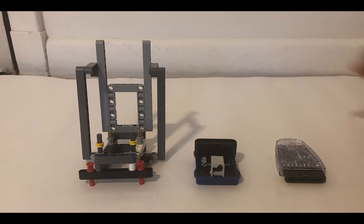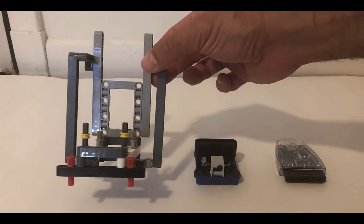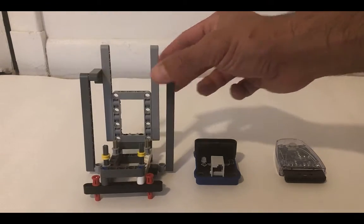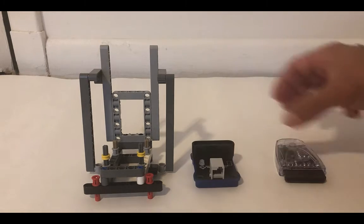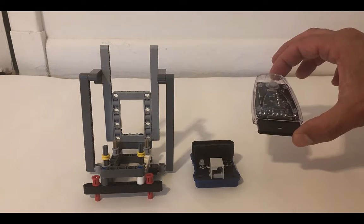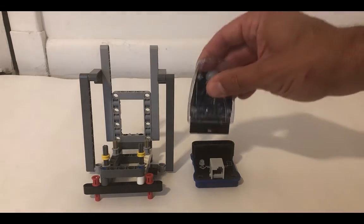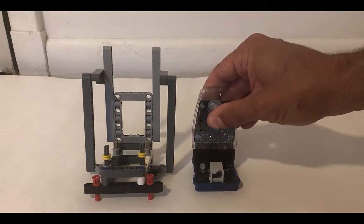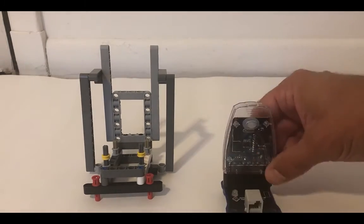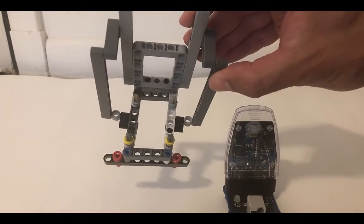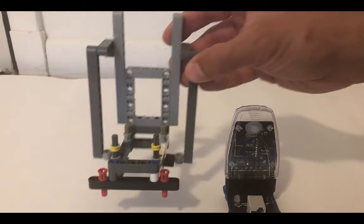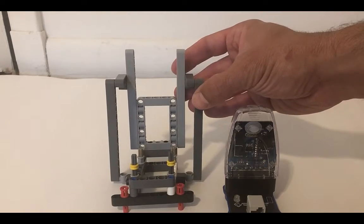Once you've completed the construction of the wireless attachment, take the PSPNX device and the wireless receiver from the remote control and connect them to each other. Then take the four holes here and the four axles on the wireless attachment and connect the two devices.